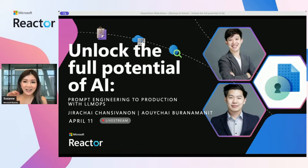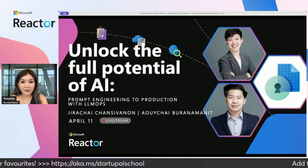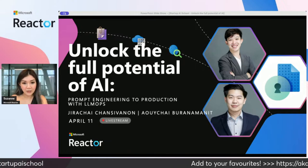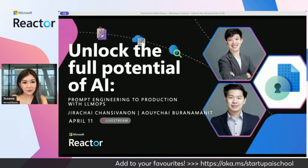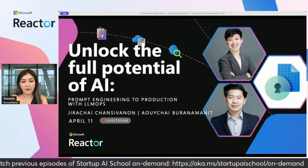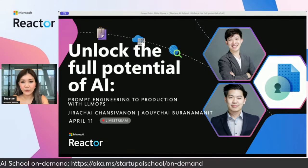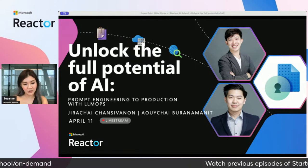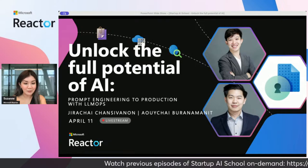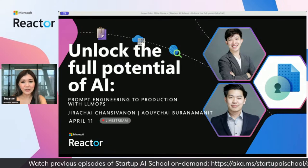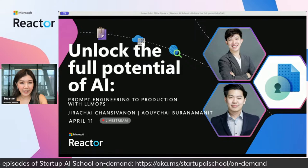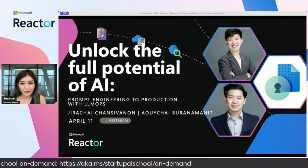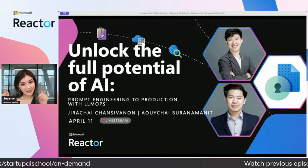We're at the fifth session of our series today and we have many more lined up. I'll drop the link so you can check out our sessions, and if you have missed our previous four episodes, you can also find them on demand. Today's session is all about LLM Ops and how we can unlock the full potential of AI using LLM Ops for prompt engineering to production. You can drop an emoji to tell us where you're joining from, and on a scale from one to ten, let us know your knowledge about today's topic in the chat.